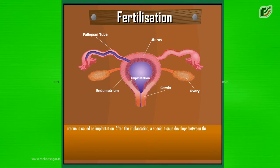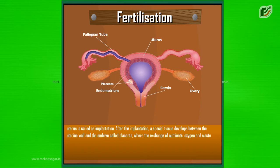After the implantation, a special tissue develops between the uterine wall and the embryo called placenta, where the exchange of nutrients, oxygen and waste products takes place.